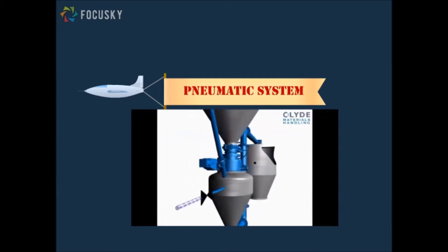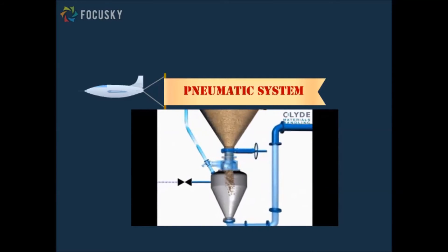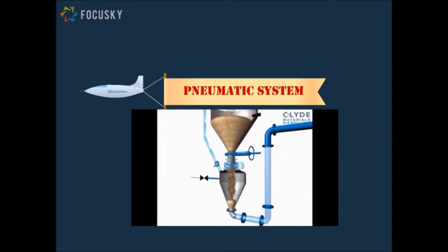Pneumatic transport system uses air to transport material through a pipe or duct. The air is normally supplied by a fan or a blower. A sufficient air velocity must be maintained throughout the system to prevent settling of skimmed milk powder inside the pipe.